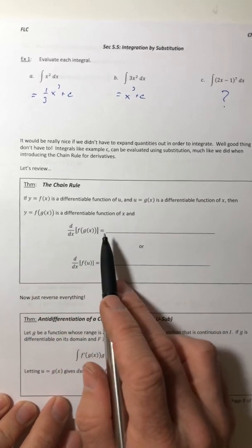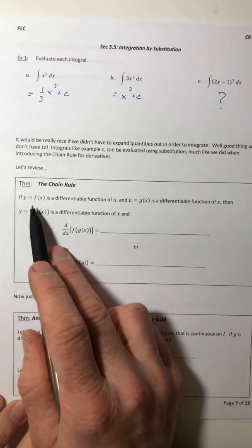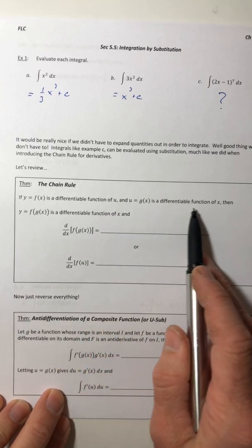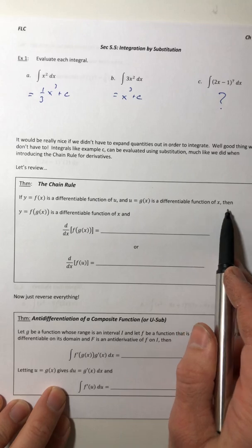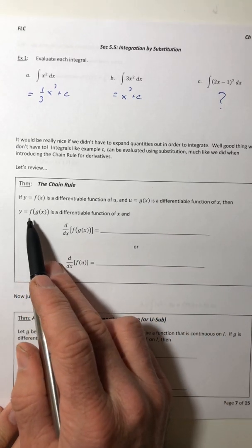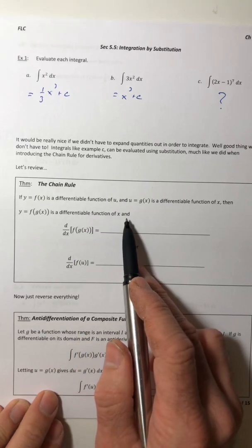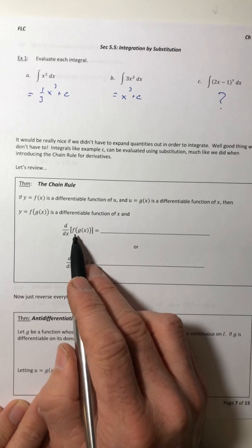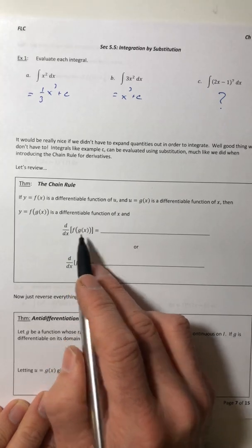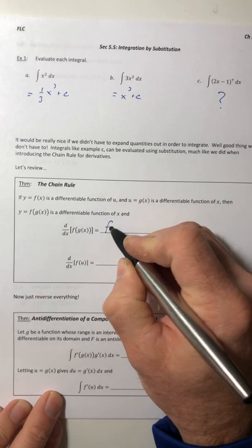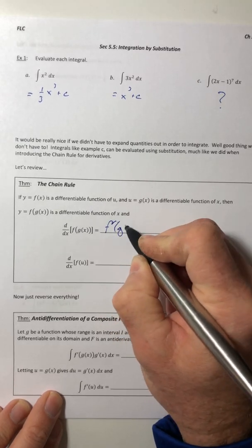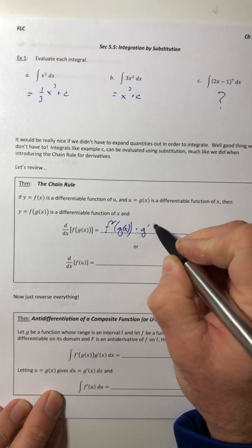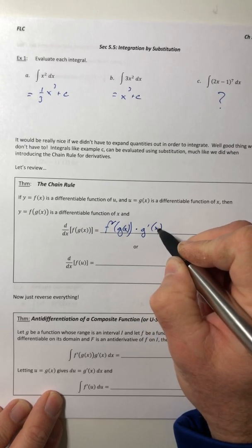Let's review what that was. If y equals f of x is a differentiable function of u, and u equals g of x is a differentiable function of x, then y equals f of g of x is also differentiable of x.